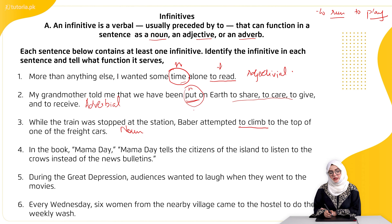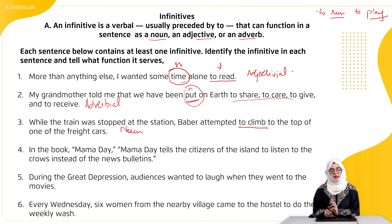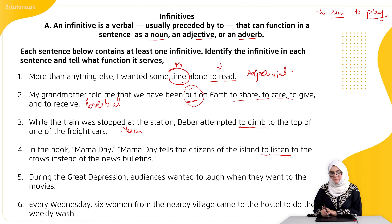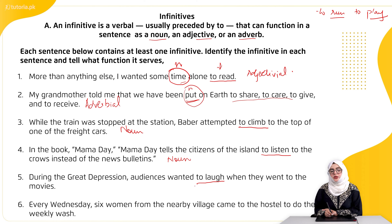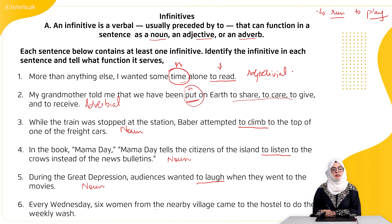Fourth: 'In the book Mama Day, Mama Day tells the citizens of the island to listen to the crows instead of the news bulletins.' Yahan bhi it's serving as a noun — because it answers 'what': Mama Day tells citizens to do what? To listen to the crows. So the infinitive is acting as a noun. Fifth: 'During the Great Depression, audiences wanted to laugh when they went to the movies.' Again, what did audiences want to do? They wanted to laugh — so 'to laugh' is acting as a noun.